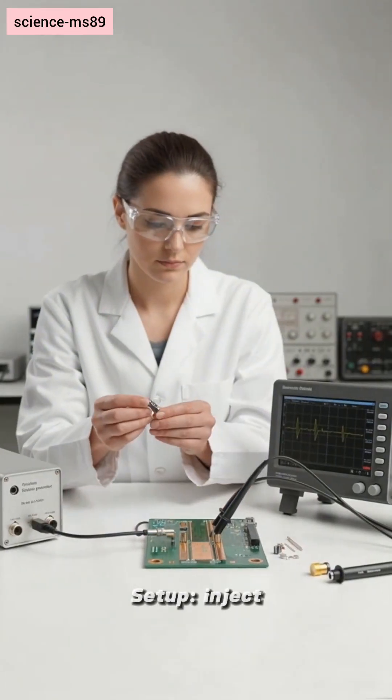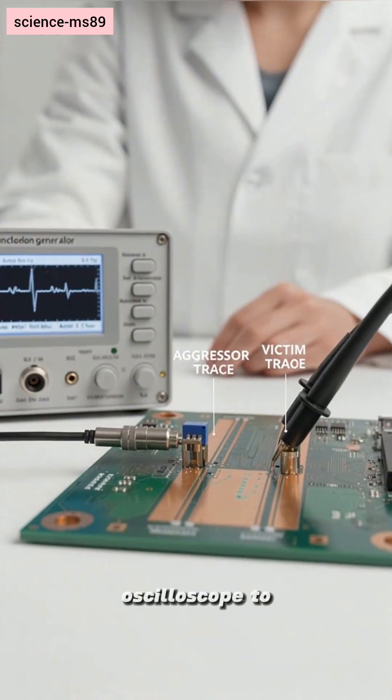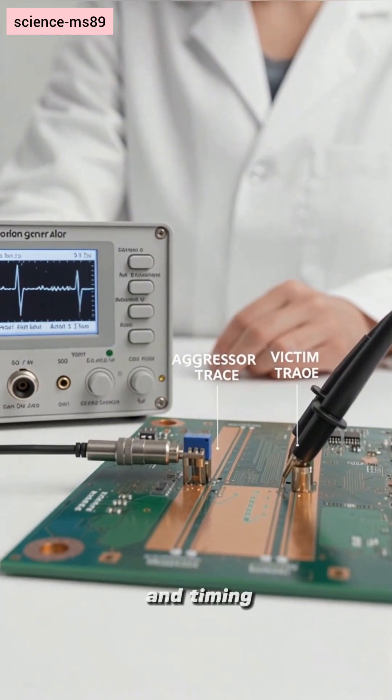Setup. Inject a high-frequency signal into the aggressor trace. Probe the neighbor with an oscilloscope to measure induced voltage and timing jitter.